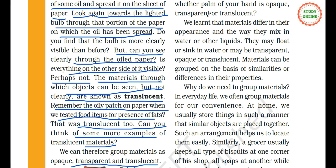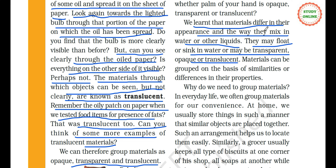We learn that materials differ in their appearance and the way they mix in water or other liquids. They may float or sink in water, or may be transparent, opaque or translucent. So the differences we found in materials are: appearance (shining or not, rough or smooth), solubility (mixing in water or not), floating or sinking in water, and being transparent, opaque or translucent.